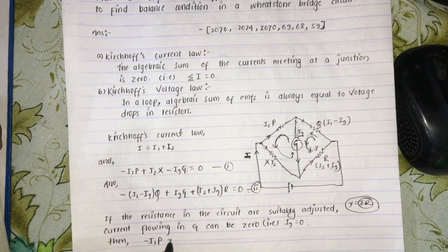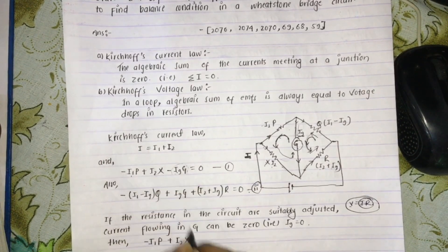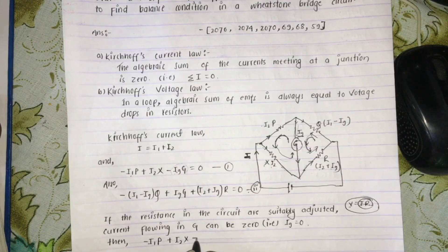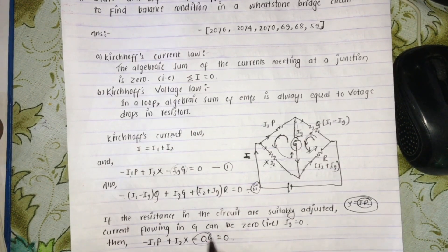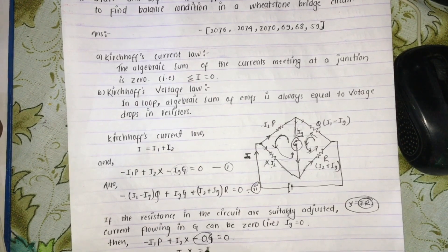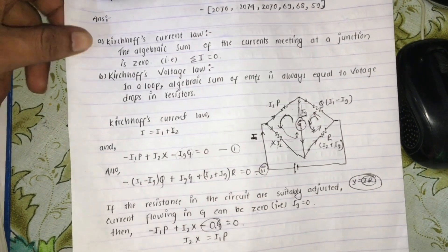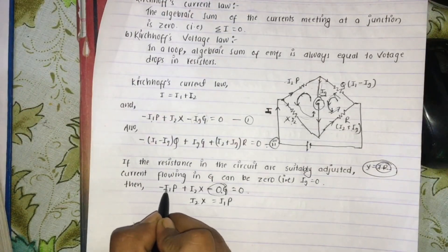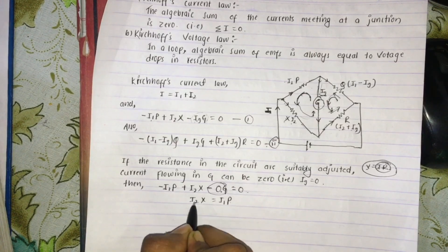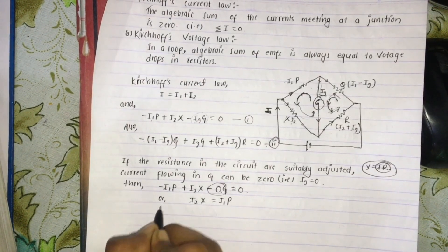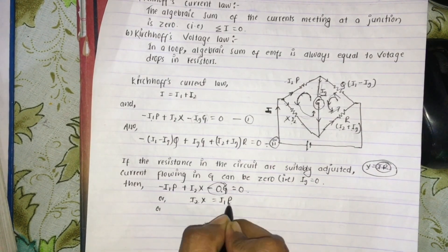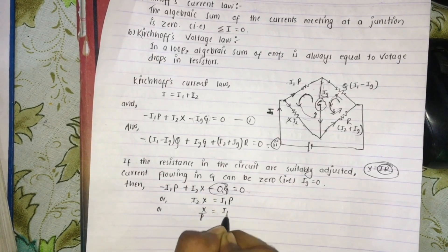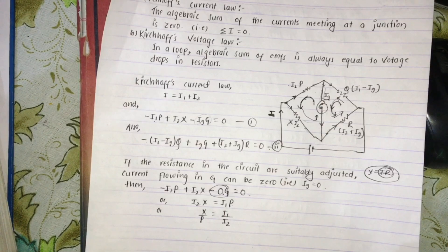This equation becomes: minus I1 times P plus I2 times X equals zero, because IG equals zero. So zero times G is zero. Then: I2 times X is equal to I1 times P. Last step: so what is this equation? I1 times X and I1 times P and I2 times X — rearranging the terms.